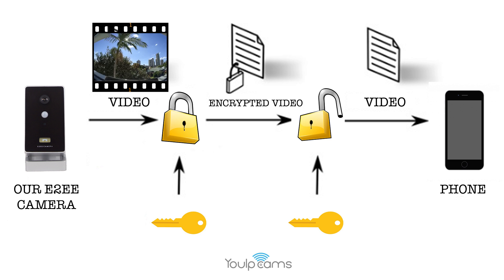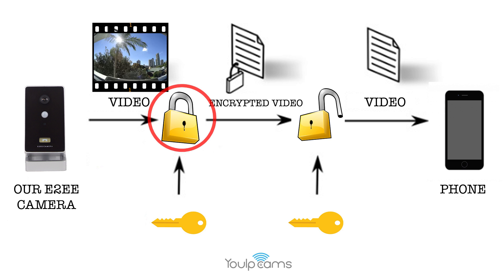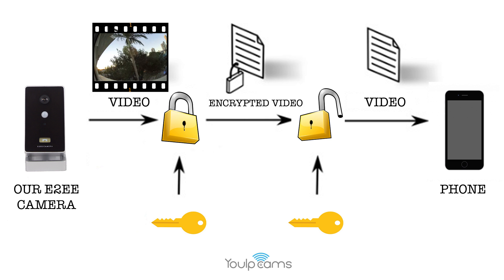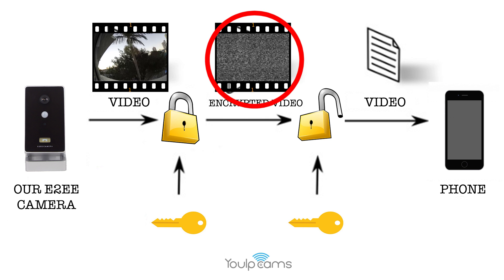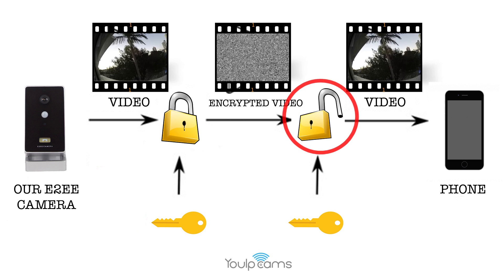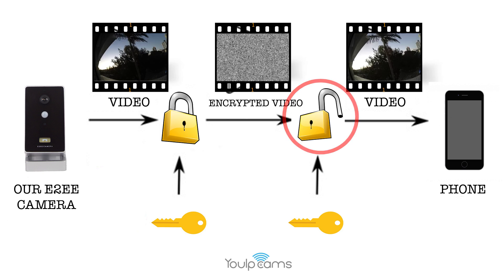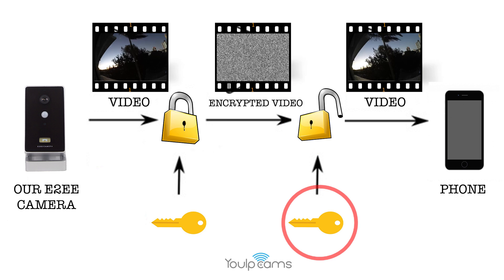Our camera uses end-to-end encryption technology. Your video data is encrypted in the camera and sent through the internet that way. Even if someone gets your password or intercepts the data, it would be encrypted and look like this. The video is then decrypted on the phone of the user and only for that user. Your data is stored on our server encrypted by your private key, so that even our software engineers couldn't see your video.